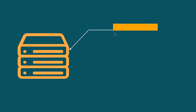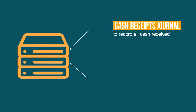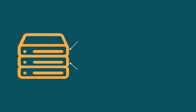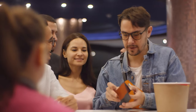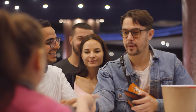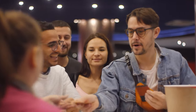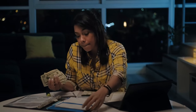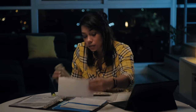There are two types of journals: the Cash Receipt Journal and the Cash Payment Journal. The Cash Receipt Journal is to record all the cash received, and the Cash Payment Journal is to record all the cash payments.